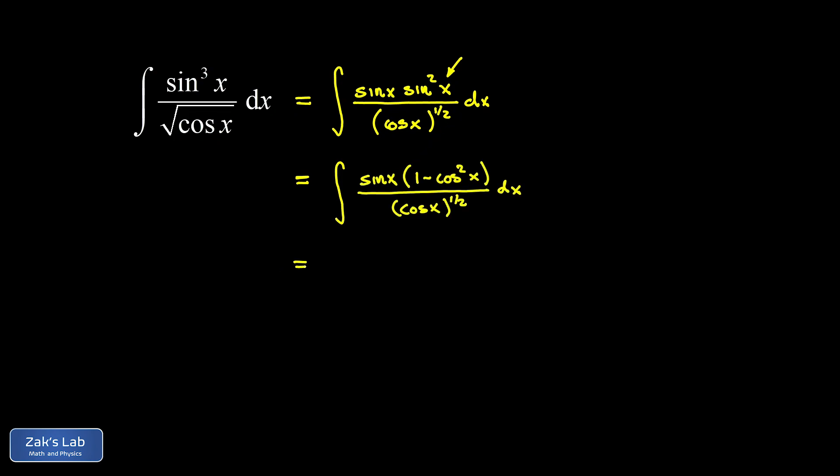The whole point is to get a sine x times a bunch of cosine-containing terms, because sine x gives us the differential of cosine x — at least within a minus sign it does. And that's going to allow us to compute the antiderivative.